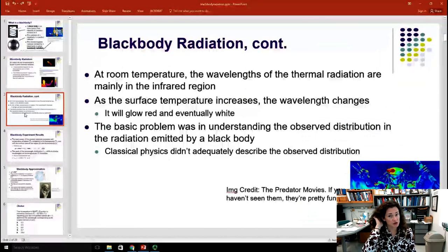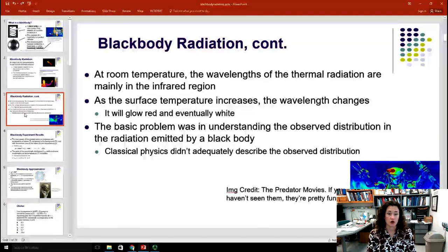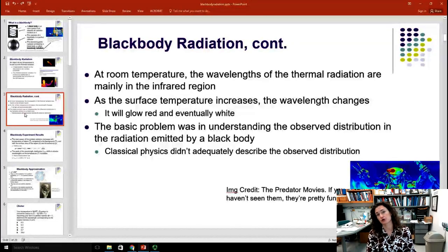So at room temperature, the wavelengths of thermal radiation are in the infrared region. As the surface temperature increases, the wavelength changes. It'll glow red, eventually white. The wavelength will get shorter and shorter. If you increase the temperature even more, it'll go into the ultraviolet and then into the X-ray range.